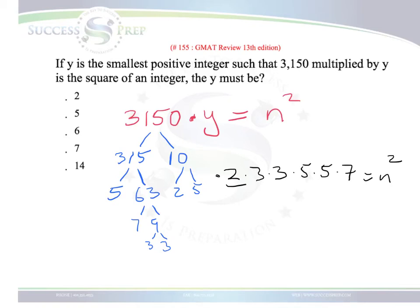Well, times a y. There's a y there. So based on what we said earlier, if this is going to be the square of a number, everything here has to be paired. Right now, we have a pair for the 3s, we have a pair for the 5s, but we don't have a pair for the 2, and we don't have a pair for the 7. So this gives us a hint of what this y needs to be.